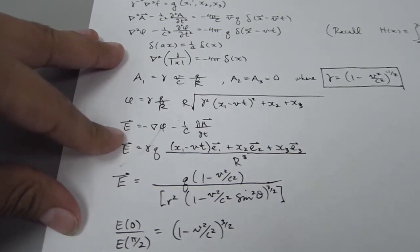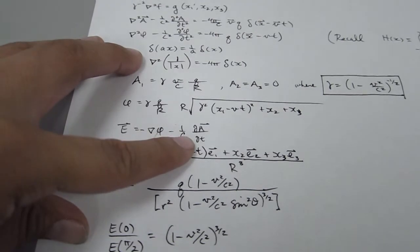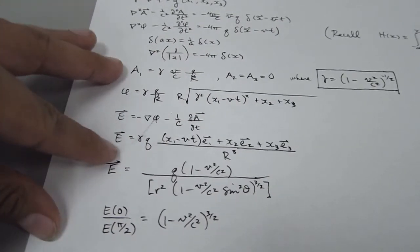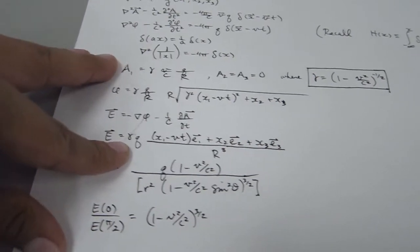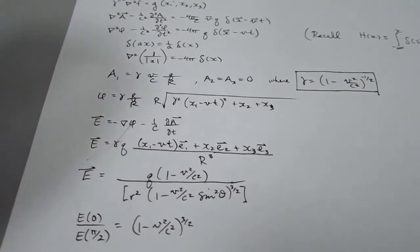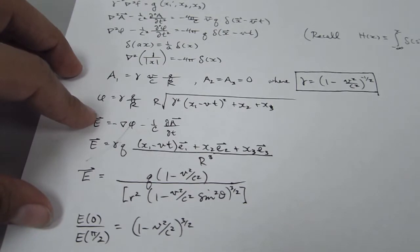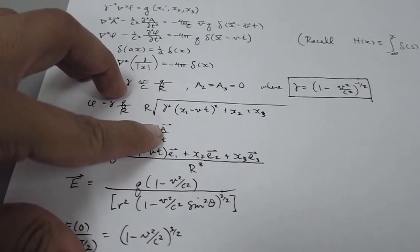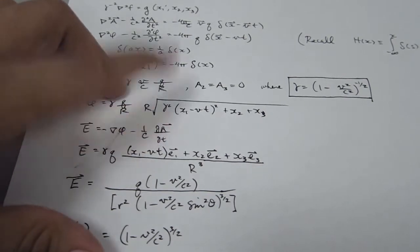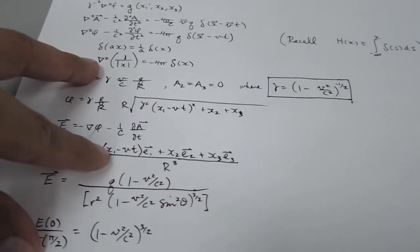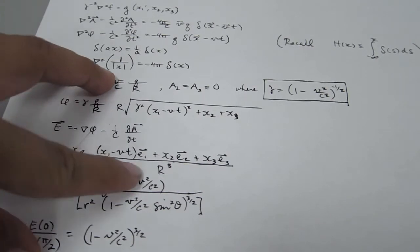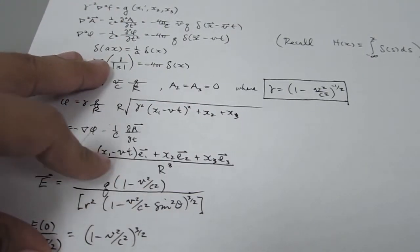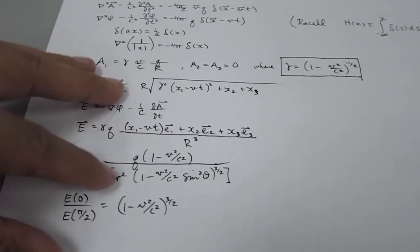The electric field is given by the static part plus the dynamic part — the dynamic part being 1 over the speed of light times the time derivative of the vector potential. We're assuming this is a spherical charge with radius small r traveling at constant speed. Because it's traveling at constant speed and the vector potential only depends on speed, its time derivative is zero, so we only get the static part. Here r is as defined above, and the e's are the basis vectors depending on the coordinate system.